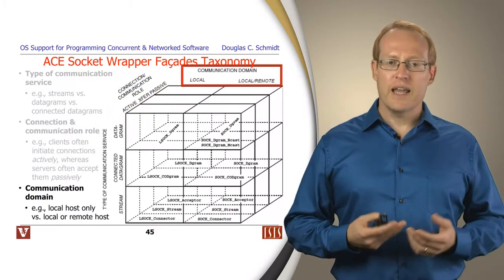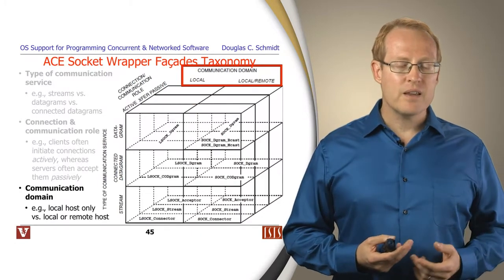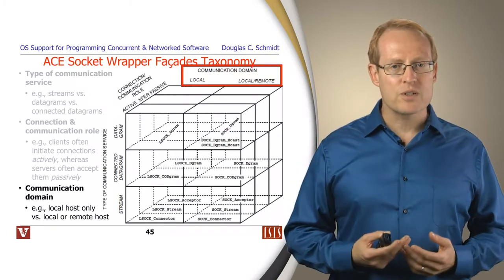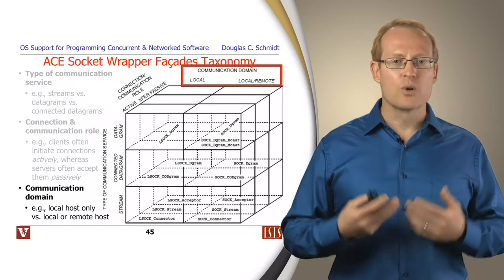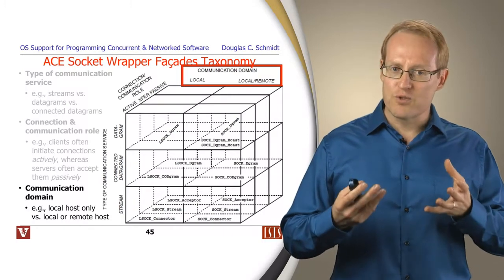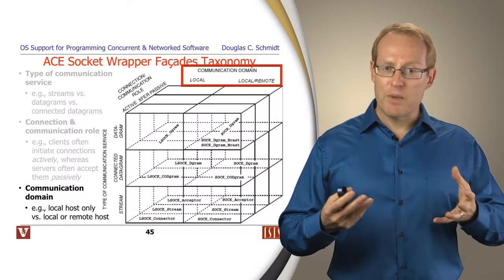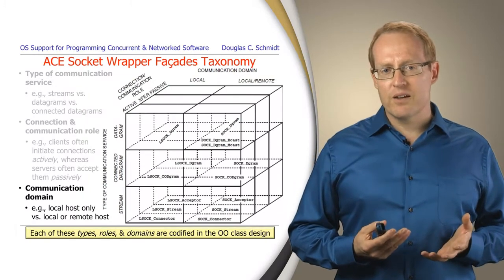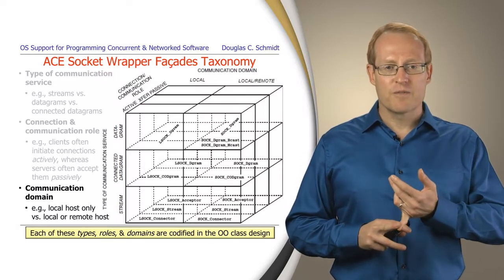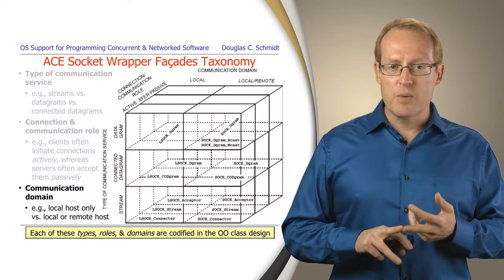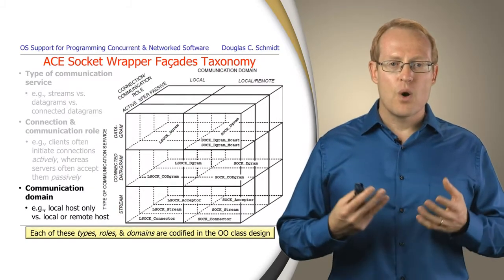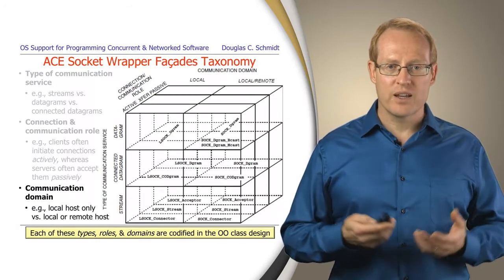Yet another role is the communication domain. Is it internet domain, which is meant to use TCP/IP across address spaces across networks or across hosts on different networks? Or is it intended to be used for local domain, local communication, local sockets, the so-called Unix domain communication, where the processes reside on the same host machine but may run in different processes? The nice part about the wrapper facades is that by using the wrapper facade pattern, ACE is able to encapsulate these different types, roles, and communication domains in the object-oriented design. It's easy to tell at a glance by looking at the names of the classes, what role they play in the overall communication paradigm.